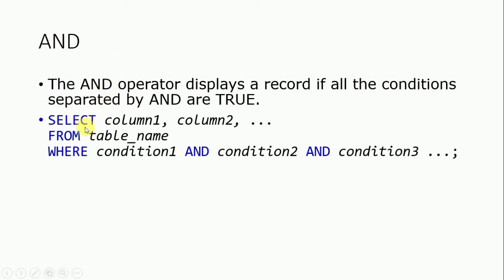The syntax for AND: in SELECT we write the column names like student name and class, then FROM to specify the table, then WHERE condition 1 AND condition 2 AND condition 3, and so on. For example: students who are age 15, class 9, and city Islamabad — all three conditions must be fulfilled to display the record.